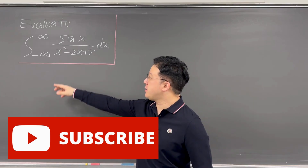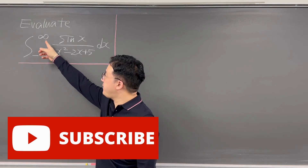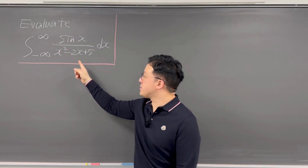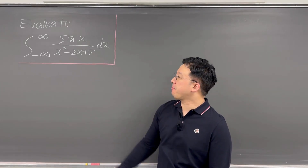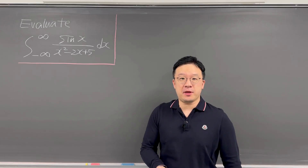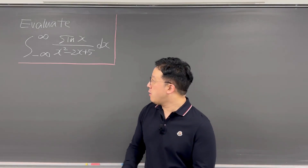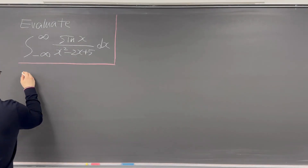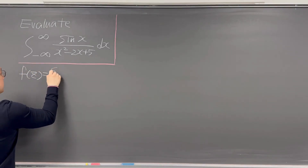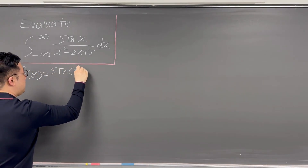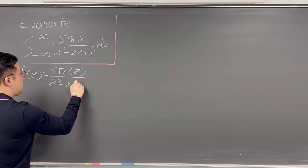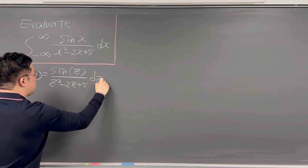Okay, here's the question. Evaluate this integral from negative infinity to infinity of sine(x) over x² - 2x + 5, dx. For this integral, I'll be using complex analysis with the contour method and residue theorem, so I'll be calling this f(z) as sine(z) over z² - 2z + 5, dz.